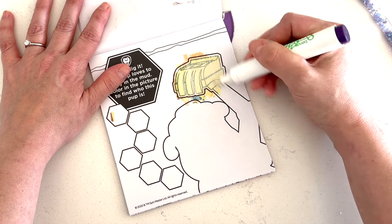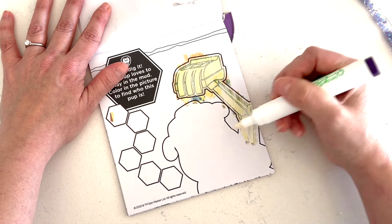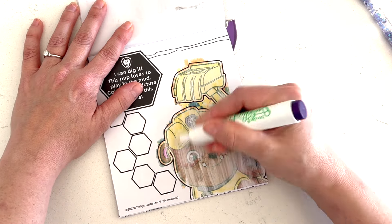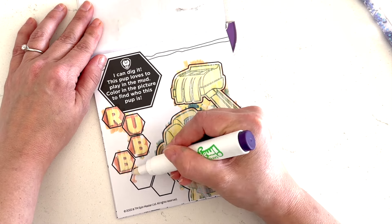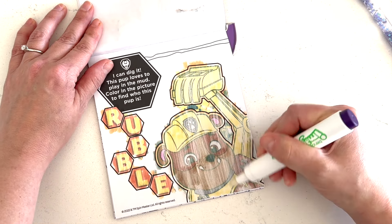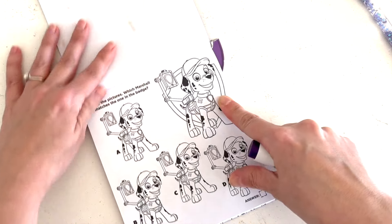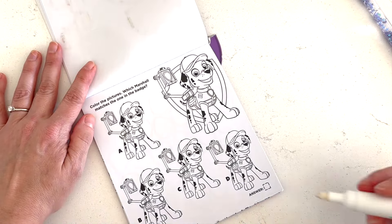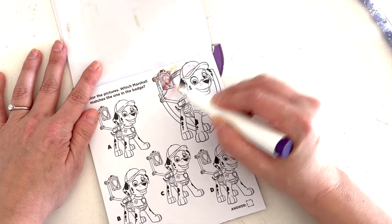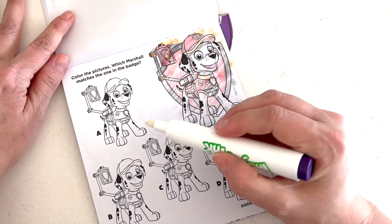I can dig it. This pup loves to play in the mud. Color in the picture to find out who this is. Hmm. Let's do this part first. Ooh. Is that Rocky? Does Rocky like to play in the mud? Rubble! Rubble likes to play in the mud. Go Rubble!